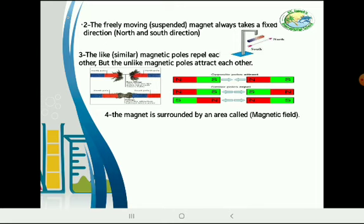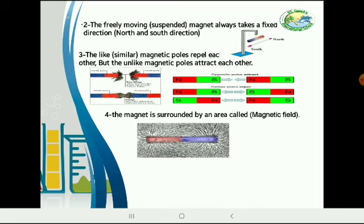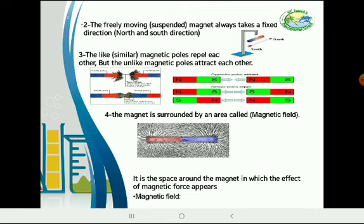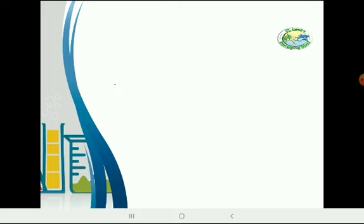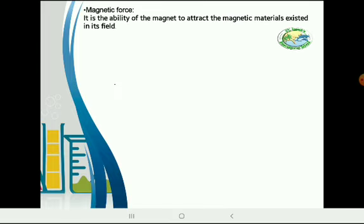Number 4: the magnet is surrounded by an area called the magnetic field — the space around the magnet in which the effect of the magnetic force appears. The magnetic force, which is the ability of the magnet to attract magnetic materials, exists within this field or space.